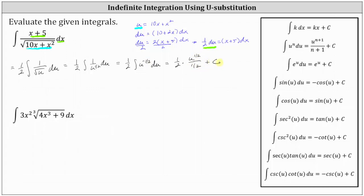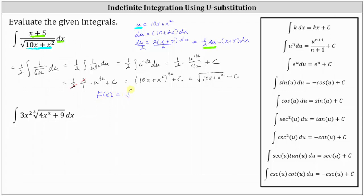Simplifying further, dividing by one half is equivalent to multiplying by the reciprocal two over one, which gives us one half times two over one times u to the power of one half plus C. Simplifying, we just have u to the one half plus C, which in terms of x is the quantity 10x plus x squared raised to the power of one half plus C. Or we could write this as the square root of the quantity 10x plus x squared plus C. We use F(x) for the antiderivative, so F(x) equals the square root of 10x plus x squared plus C — the family of functions whose derivative equals the given integrand.